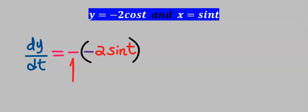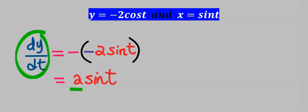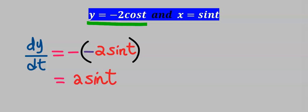If we differentiate y with respect to t, that is differentiating minus 2cos(t), we are going to have a minus, but when you differentiate cos you generate another minus, giving minus 2sin(t). Remember from the basic derivative table: when you differentiate cos(x) you get minus sin(x). Hence both negatives combine and our dy/dt is 2sin(t).